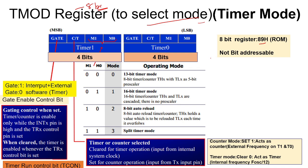It is byte addressable — very important. From LSB, the first 4 bits, that is from bit 0 to 3, are for configuring Timer 0. Bits 4 to 7 are for configuring Timer 1.